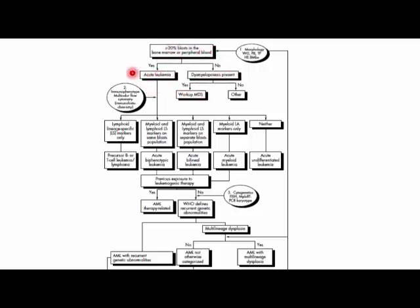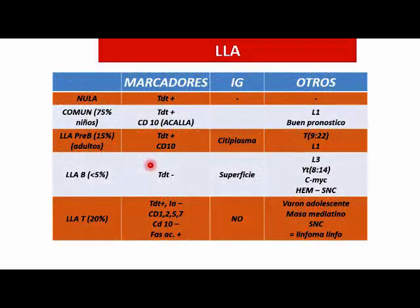Para sospechar de una leucemia aguda, uno ve mayor o igual a 20% de blastos en médula ósea o en sangre periférica. Cuando uno ve algunos blastos en sangre periférica hace un aspirado de médula ósea y se encuentra más de 20%. Si hay menos de 20% uno va a buscar otras causas como síndrome mielodisplásico. Luego se hace un proceso de diagnóstico para poder diferenciar si la línea es linfoide o mieloide dependiendo de los marcadores de los blastos.